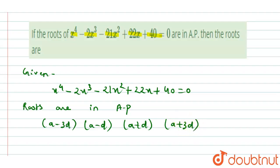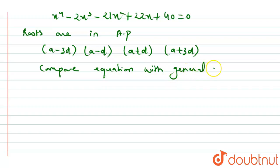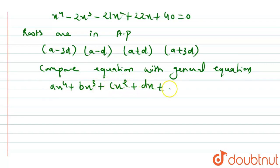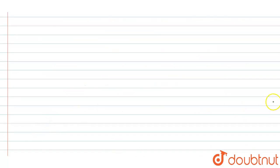Now we compare our equation with the general equation: ax⁴ + bx³ + cx² + dx + e = 0. By comparison, a = 1, b = -2, c = -21, d = 22, and e = 40.